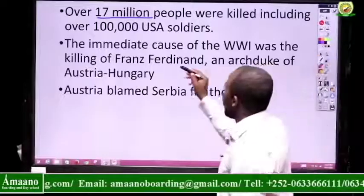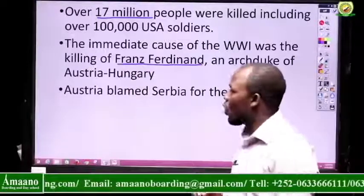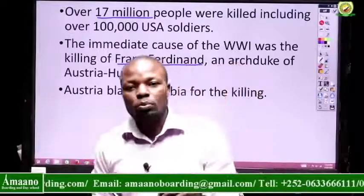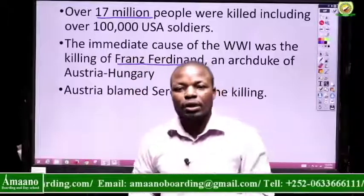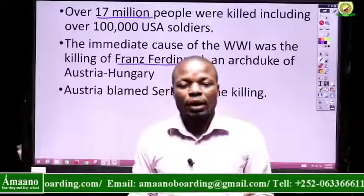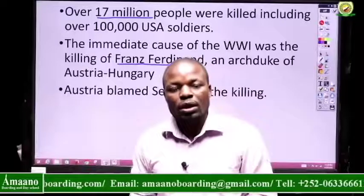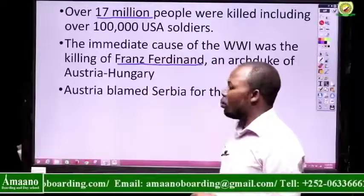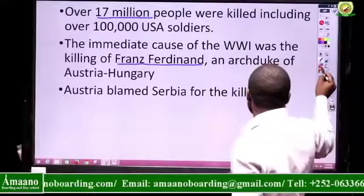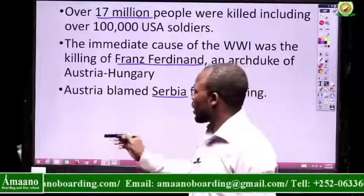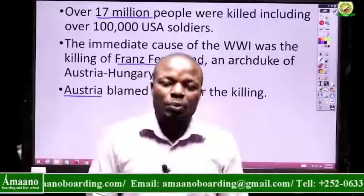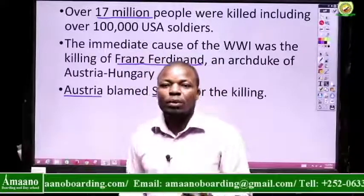The immediate cause of the First World War was the killing of Franz Ferdinand, an Archduke of Austria-Hungary — the person who was supposed to become the king of Austria. Austria is a country in Europe. After he was killed, Austria blamed their neighbors. The neighbors of Austria are Serbia, which is also a country in Europe. This is similar to how one neighboring country might blame another for the killing of an important government figure.